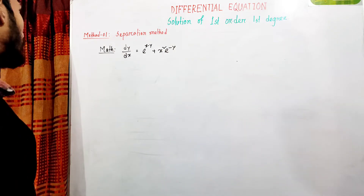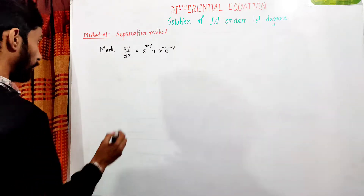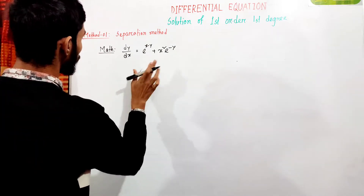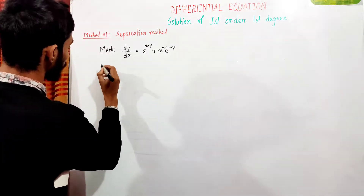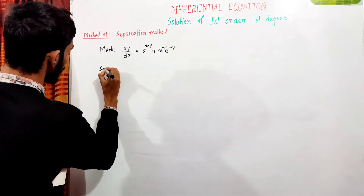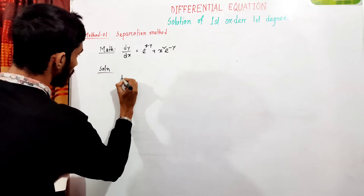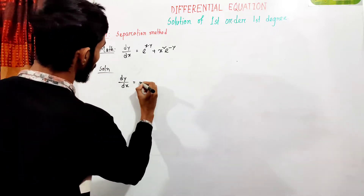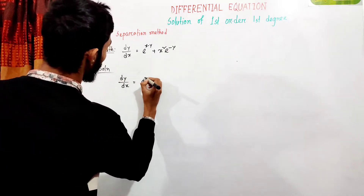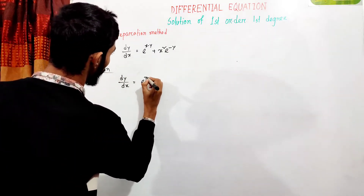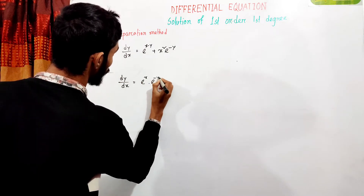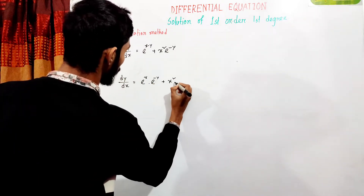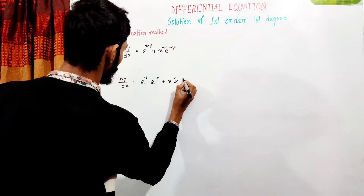We will use the separation method. So we have dy/dx equal to e to the power x into e to the inverse y plus x squared e to the inverse y.